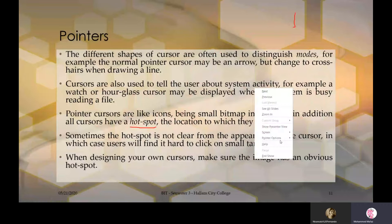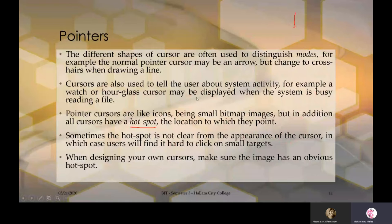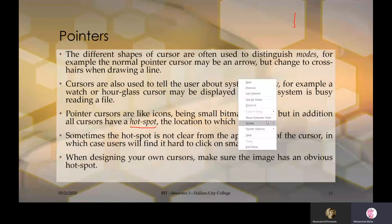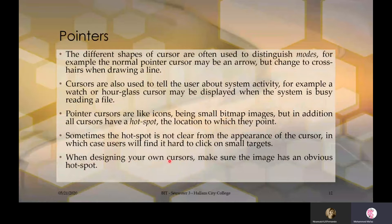Sometimes the hotspot is not clear from the appearance of the cursor, in which case users will find it hard to click on small targets. For example, with an arrow cursor it is difficult to say whether the pointing part or the middle of the cursor is the hotspot — this confuses people. For that reason, we sometimes use the crosshair type of cursor. When designing your own cursor, make sure the image has an obvious hotspot.